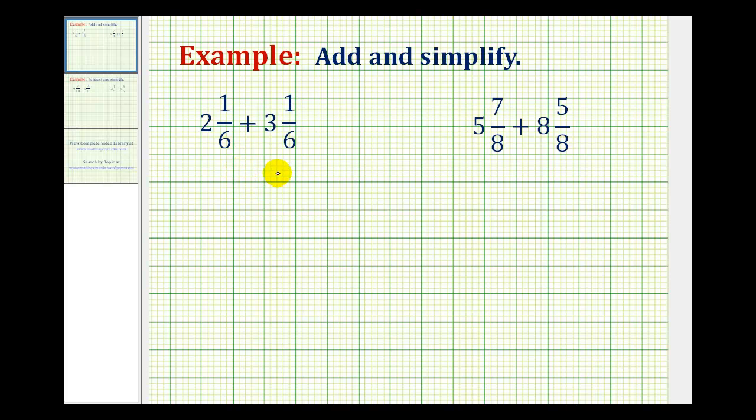Now, let's take a look at two examples of adding mixed numbers with like denominators. The first step is going to be to write this problem vertically, lining up the whole numbers and the fractions.